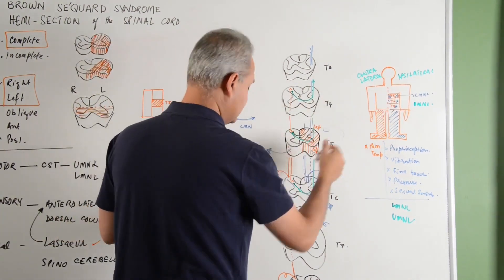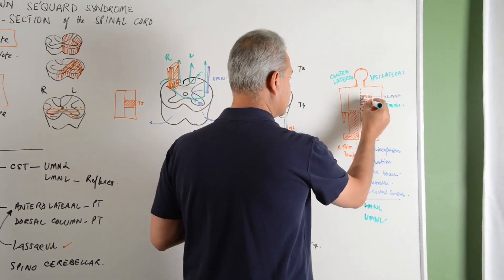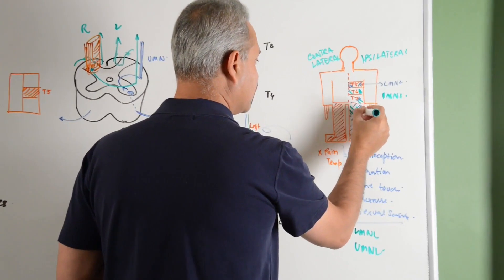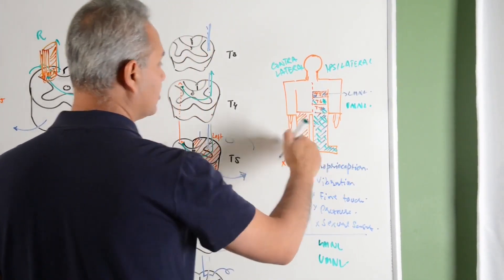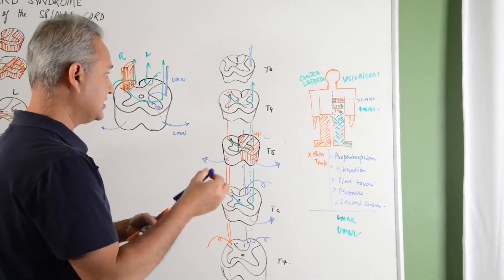Below the segment, what you will see is upper motor neuron lesion. How about on the other side? Everything is fine. That is it.